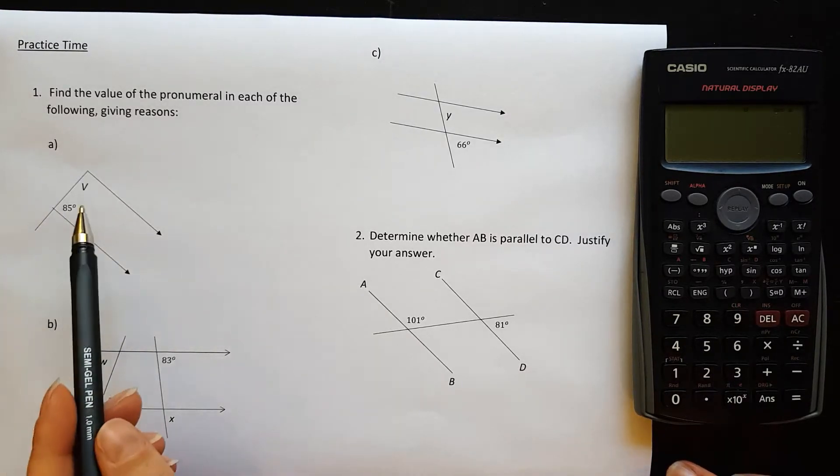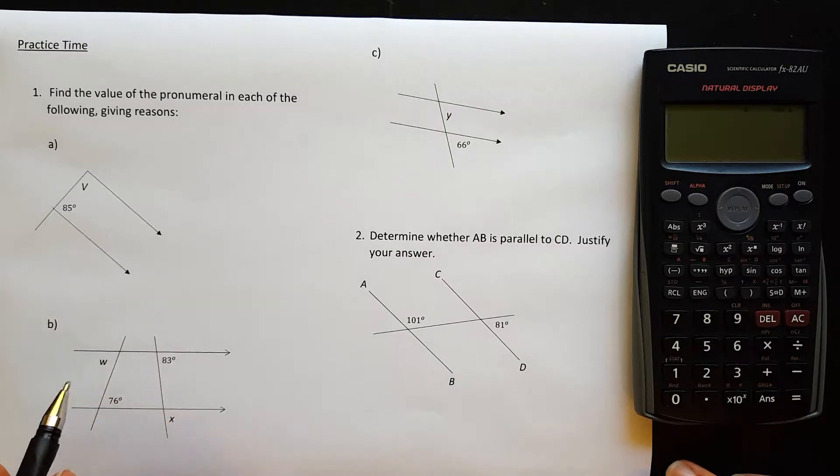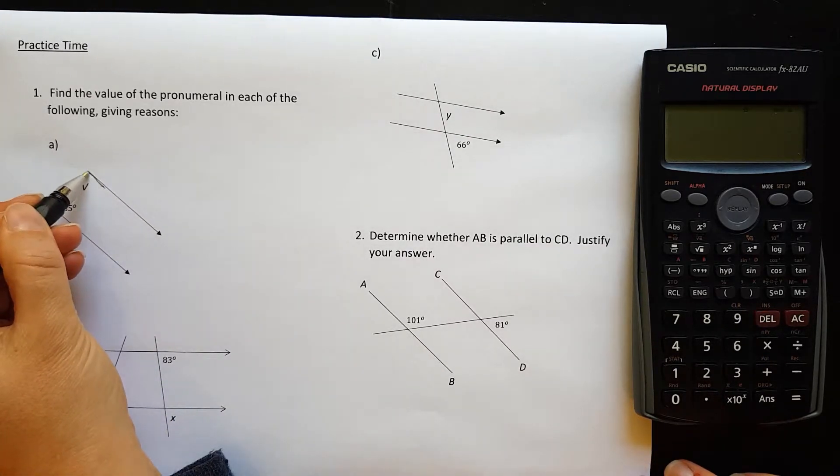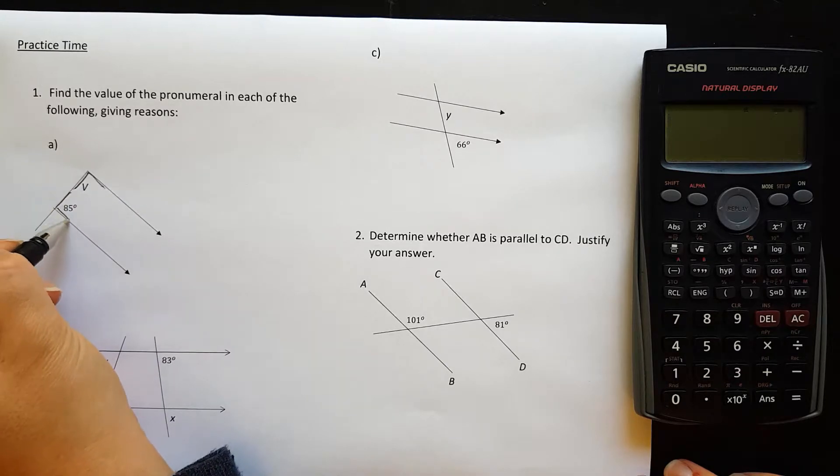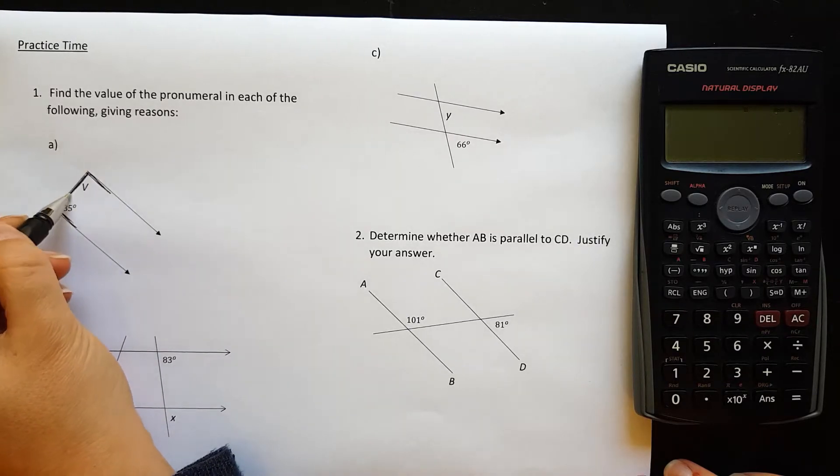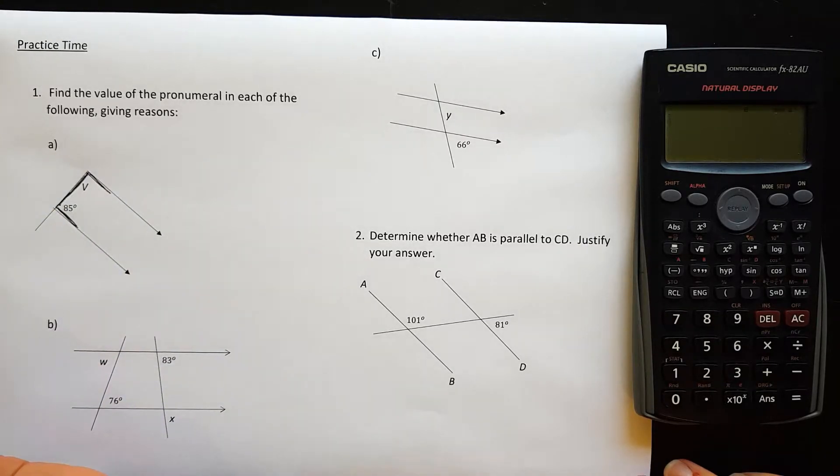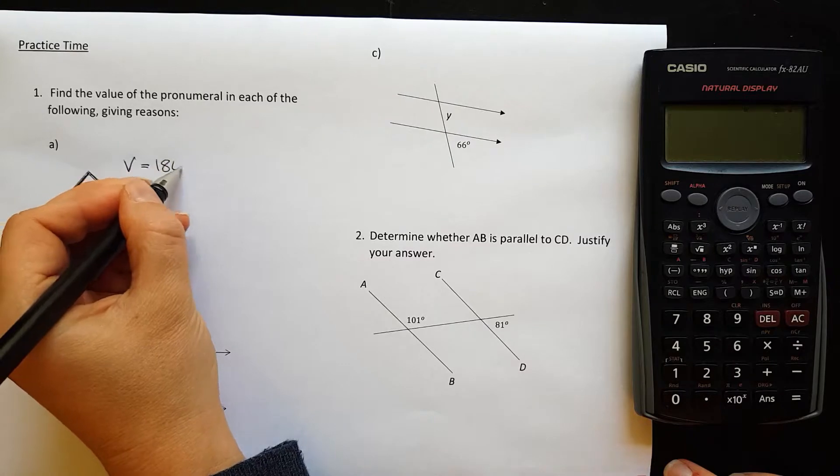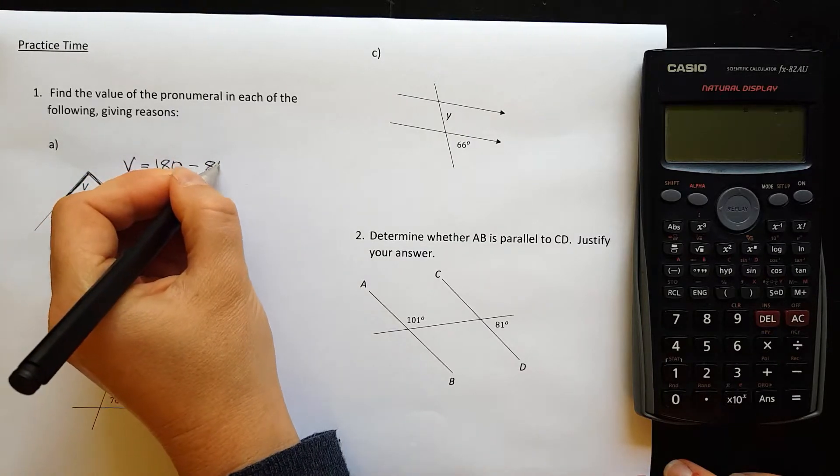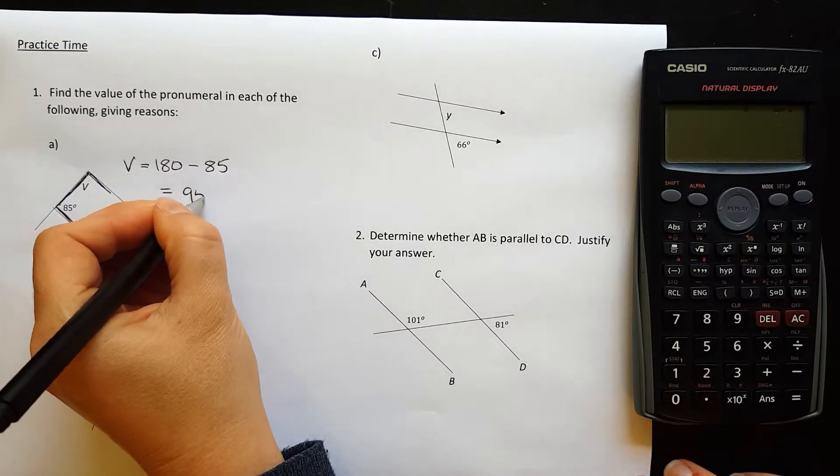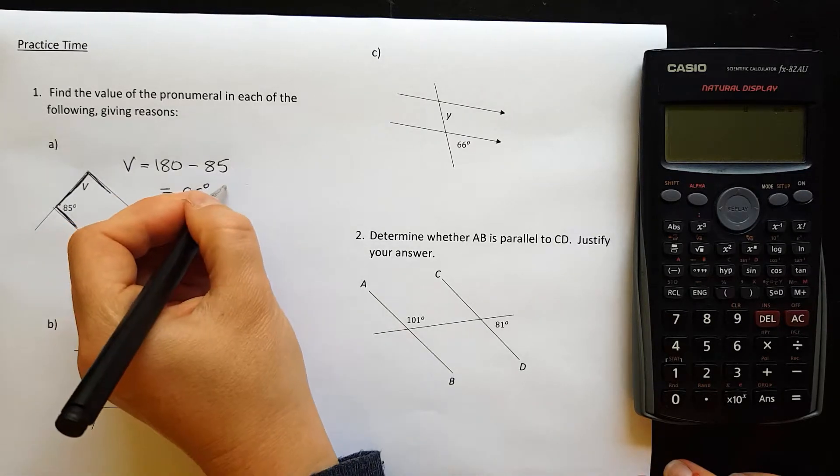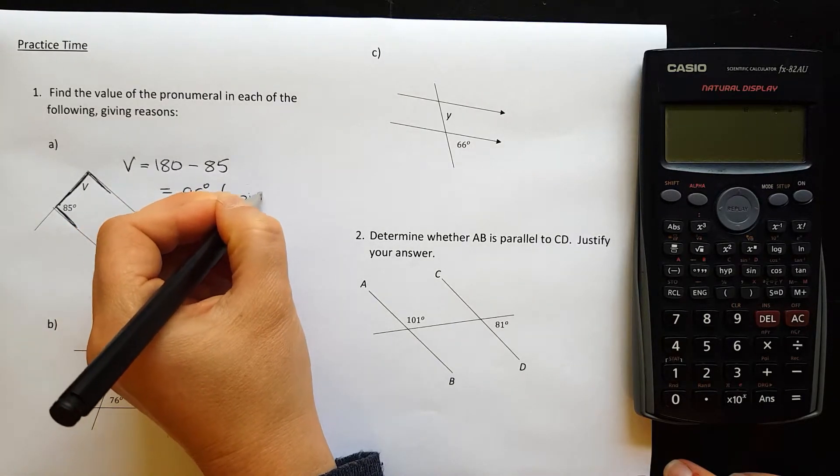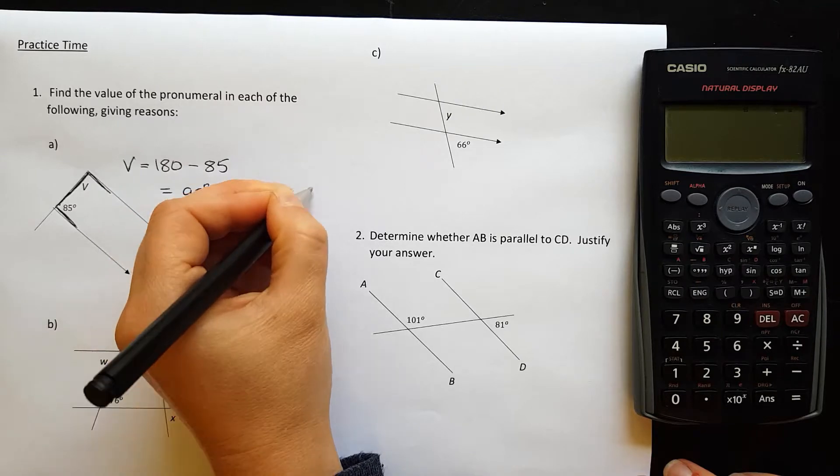For question one, find the value of the pronumeral in each of the following giving reasons. So V and 85 are forming a C shape. So that means that they're co-interior and they'll add to give 180 degrees. So if I want to find V, I start with 180 and subtract off the 85 degrees, which tells me that it's 95 degrees, and I write the reason in brackets, co-interior angles.